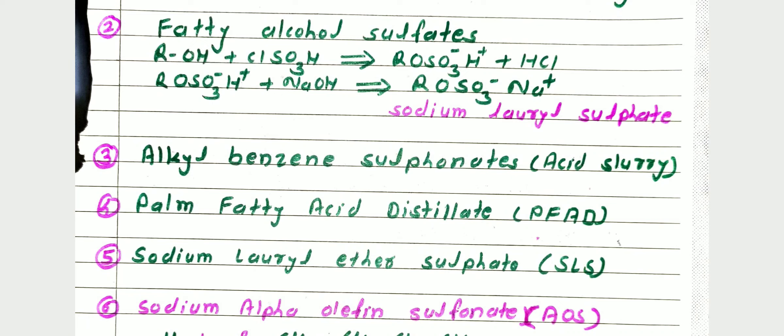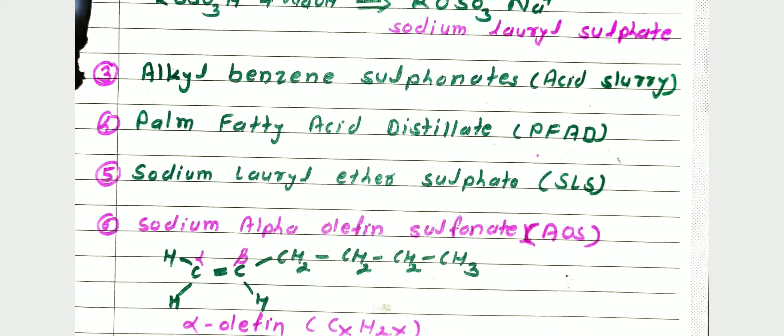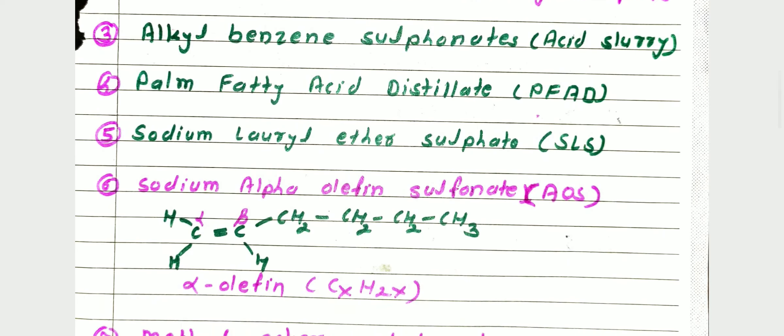Ammonium sodium lauryl ether sulfate and alkyl ethoxy sulfate (AES) are used in many cosmetic products for their cleaning and emulsifying properties. The sixth raw material is sodium alpha olefin sulfonate (AOS).